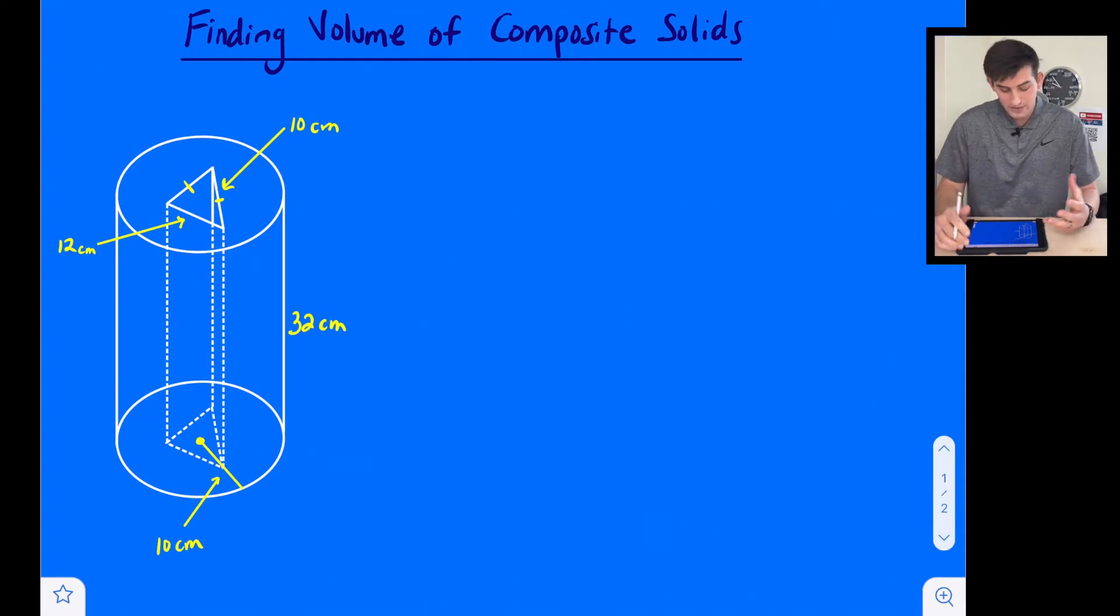In our first example, we have that second scenario where we have a solid and we have a piece that's taken out. Here we have a cylinder solid, and you can see in the middle it's like a triangular prism that has been cut out and just pulled out of our cylinder. We need to find the volume of the cylinder, also the volume of this triangular prism, and then subtract the two so that we can get the volume of our composite solid.